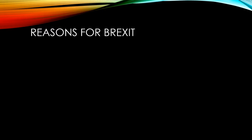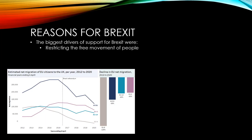Having looked at some of the issues caused by Brexit, let's look at some of the biggest drivers of support for Brexit in the first place. One of the biggest topics for many people was immigration — people were particularly worried about immigration from Eastern Europe. As you can see from this chart, both in the lead-up to the Brexit vote and since, there has been a very big decline in EU net migration, with the largest decline being from the group of countries from Eastern Europe.